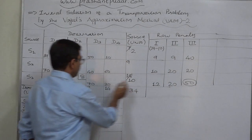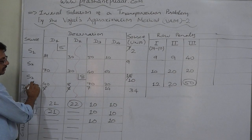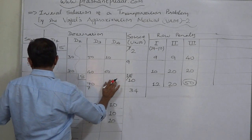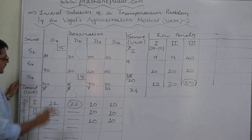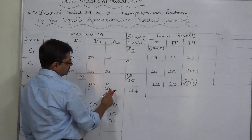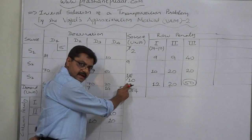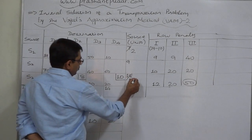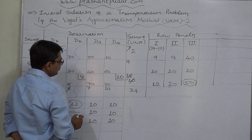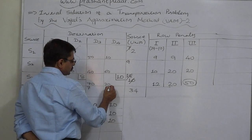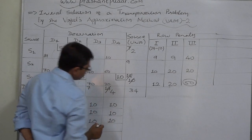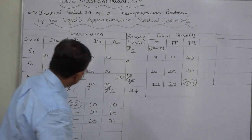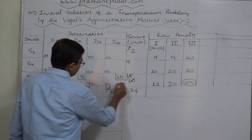We have selected row S3 with the highest penalty of 50. In this row, the open cell with the least cost is S3D4 with a cost of 20. We allocate the lower of demand (14) or supply (10), which is 10 units. The supply of S3 is exhausted; demand of D4 was 14 so there remains an unsatisfied demand of 4. We cancel row S3.